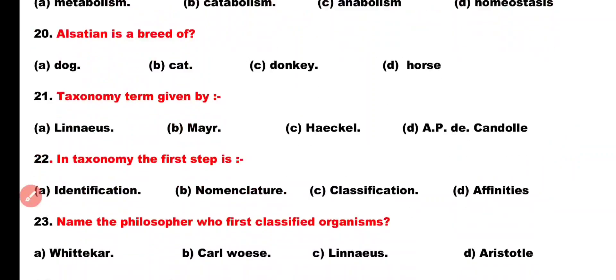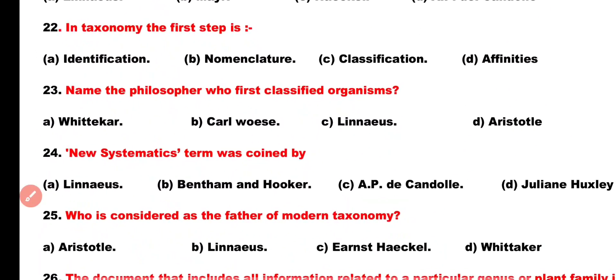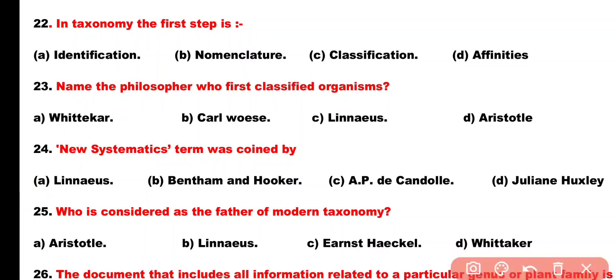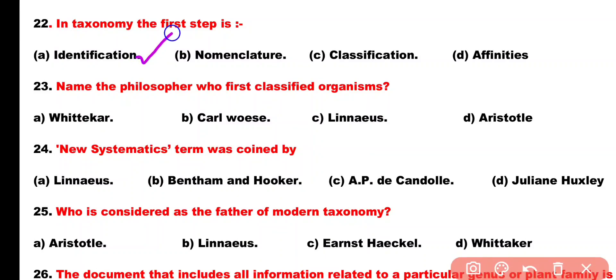Question number 22. In taxonomy, the first step is: Option A: Identification, Option B: Nomenclature, Option C: Classification, Option D: Affinities. Correct answer is Option A. Identification is the first step of taxonomy.